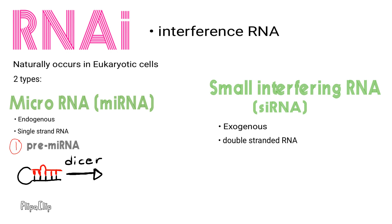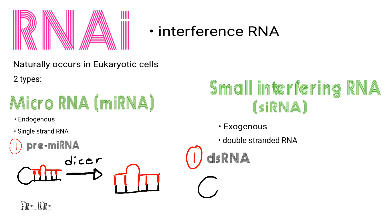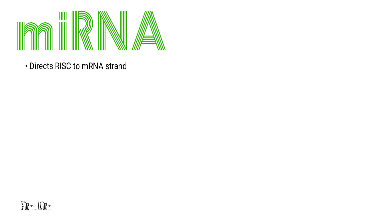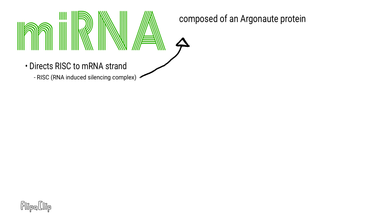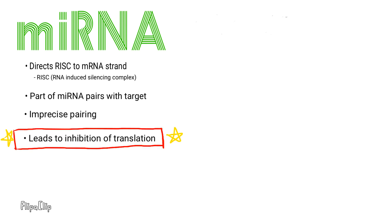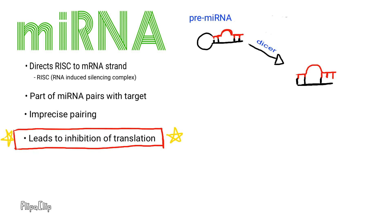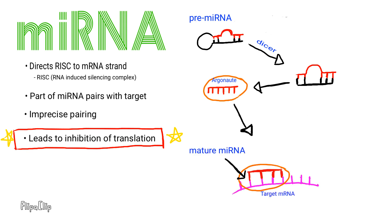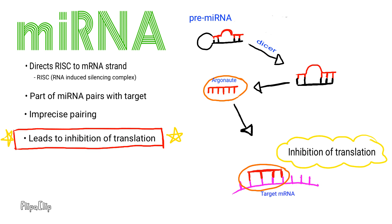Both types of short RNA affect mRNA, which in turn affects protein synthesis. MicroRNA works by directing the RISC to the target mRNA strand. The RISC is composed of an Argonaute protein and either one of the short RNAs. Part of the microRNA, called the seed, pairs with the target strand. Imprecise pairing inhibits translation. The image to the right shows how Dicer endonuclease preps the microRNA. The microRNA strand then binds to an Argonaute protein, forming the RISC. The RISC is then guided to the target strand where microRNA binds imprecisely to mRNA.